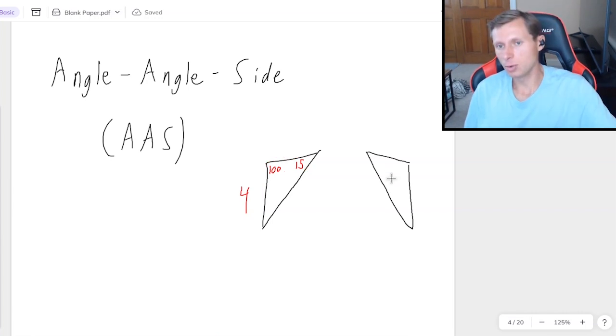And then on the other one, I just need to match it up, even though it's flipped around. It doesn't matter. 15, 100, and then four. And there. Now the two triangles are congruent by AAS.